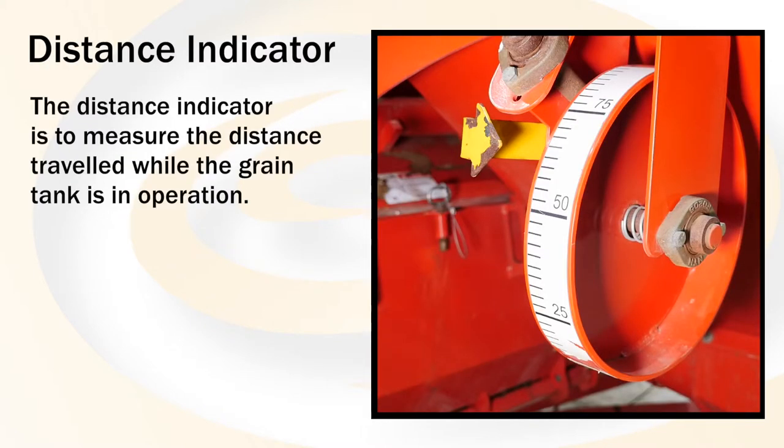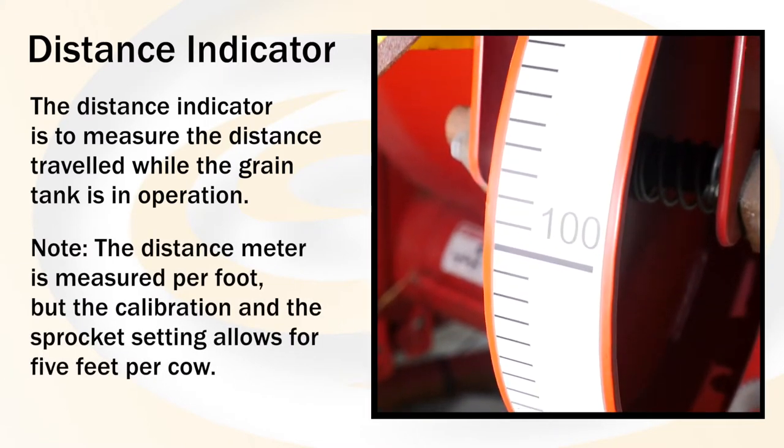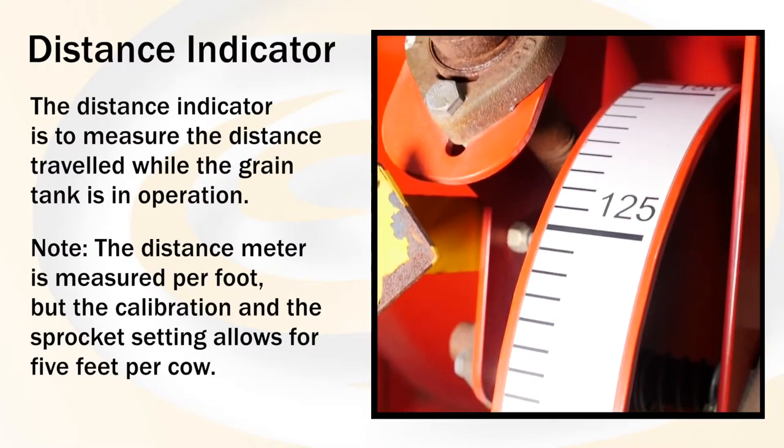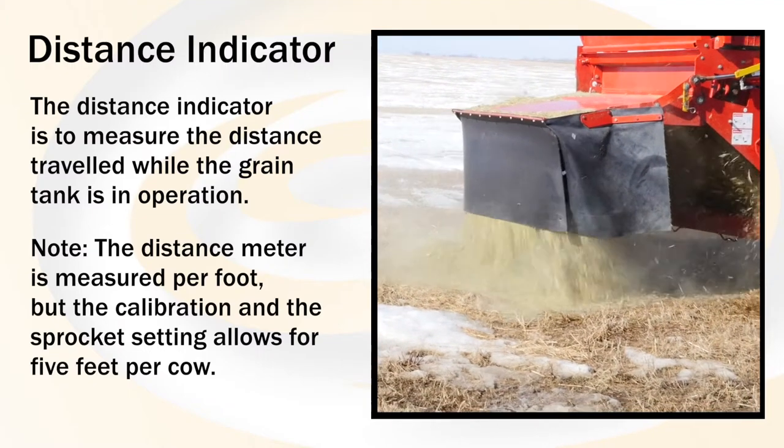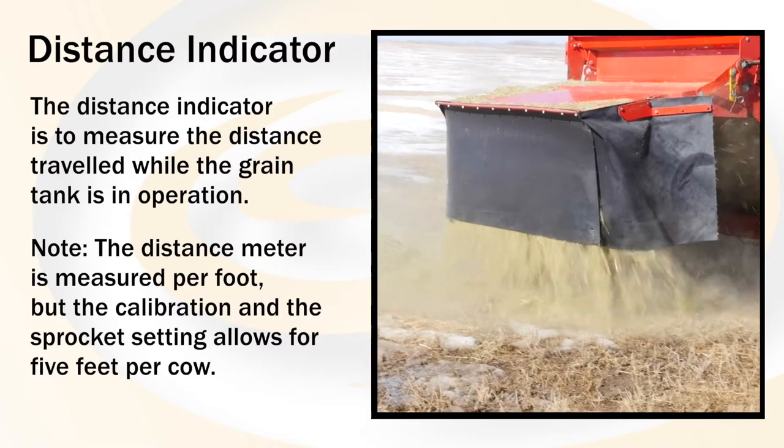This indicator is to measure the distance travelled while the grain tank is in operation. One thing to note is that the distance meter is measured per foot, but the calibration and the sprocket setting is allowing 5 feet per cow.